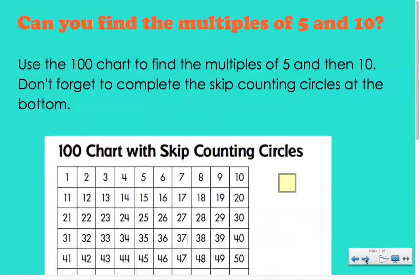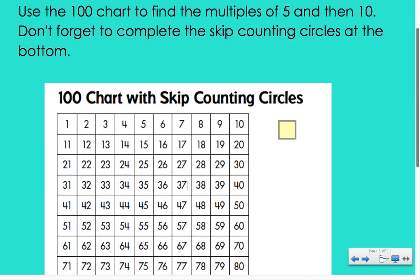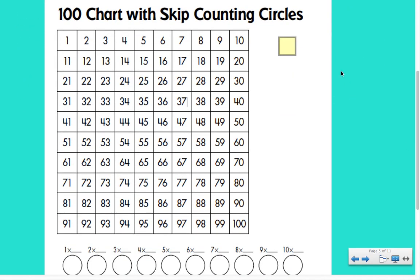Now that you have all of the multiples of two, I'd like you to use your hundreds chart to find the multiples of five and ten. You're going to do the same thing with a different colored crayon — it's entirely up to you. Find all of the multiples of five, and then on your other hundreds chart find the multiples of ten. Make sure you look at the bottom, since your copies already have the numbers completed, so color in the correct multiples. After coloring in the multiples of five, fill in your skip counting circles, then do the same for multiples of ten. Pause the video, and when finished come back and push play.